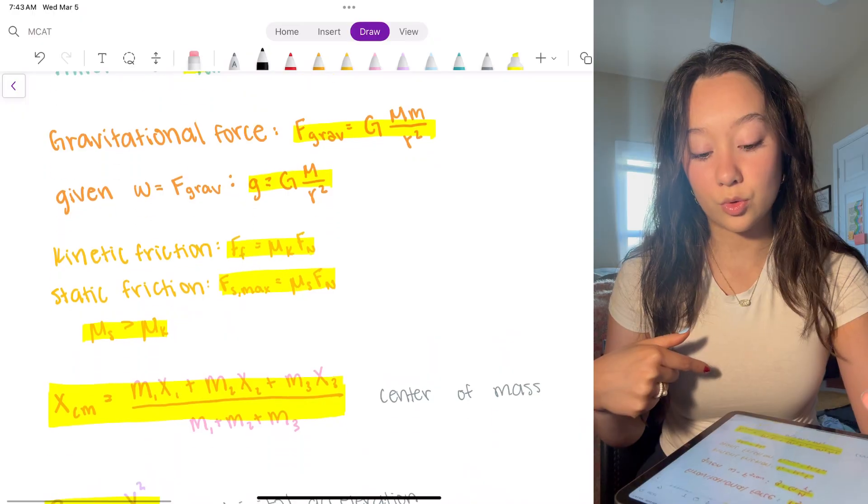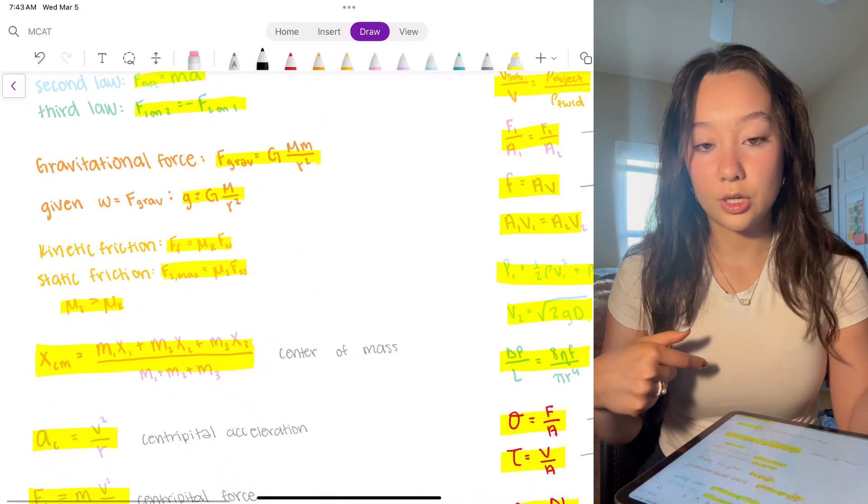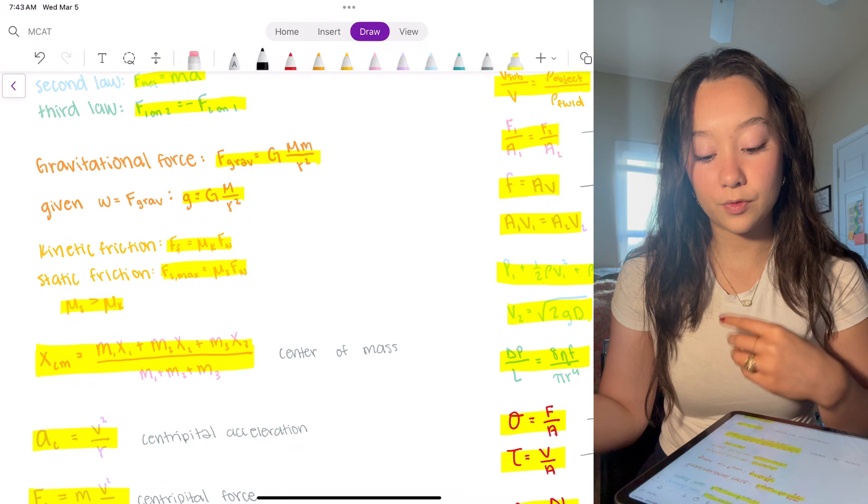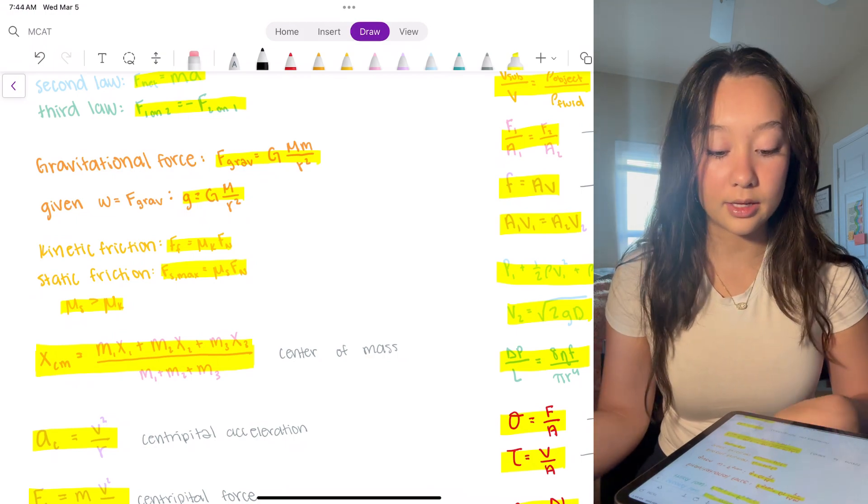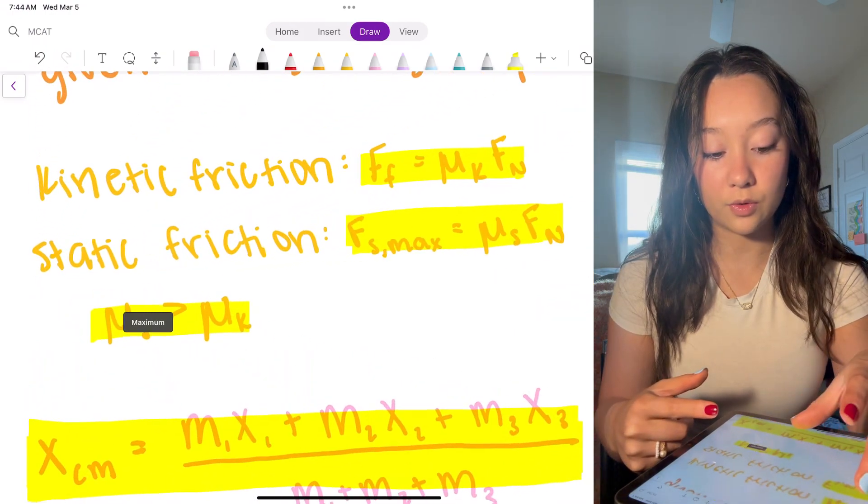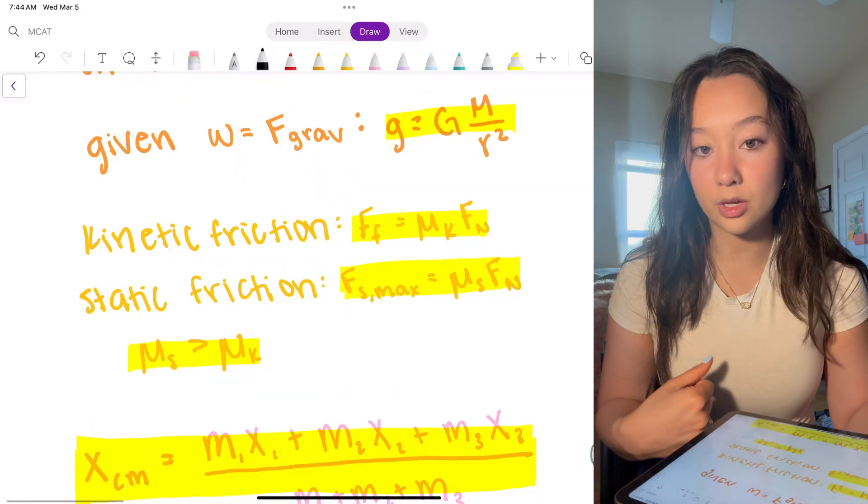We move down to gravitational force, gmm over r squared. We have friction, kinetic and static. Static friction, the coefficient mu s is always going to be greater than mu k.